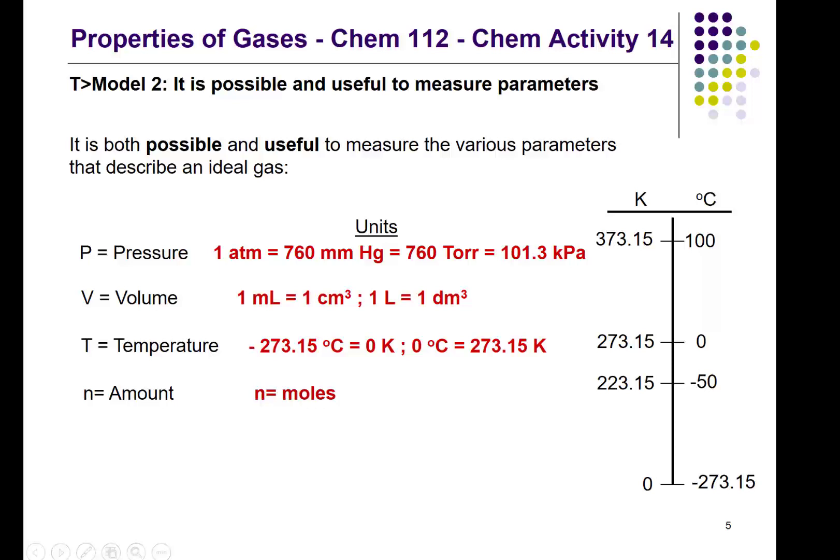We use capital K to represent the units for Kelvin, but if you were to write it out, we'd actually write it out like this. Lower k, and then we'd say Kelvins. So that's how we represent those particular units.